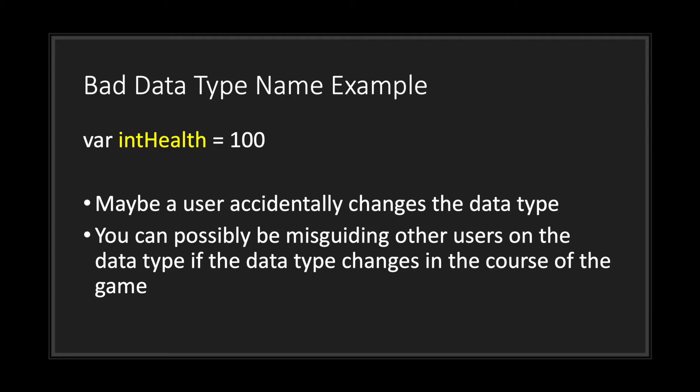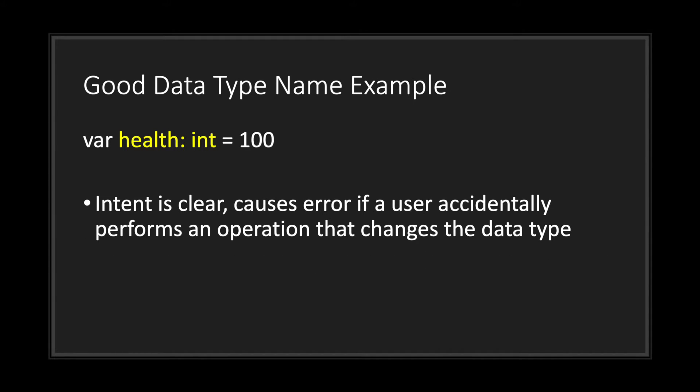Well, now you have to not only change the variable name, but you have to propagate the name changes throughout your code. Instead of putting a data type in your name, just go ahead and declare it as a specific data type for your variable. As you can see here, we've changed the variable name to health and declared an integer type for it.